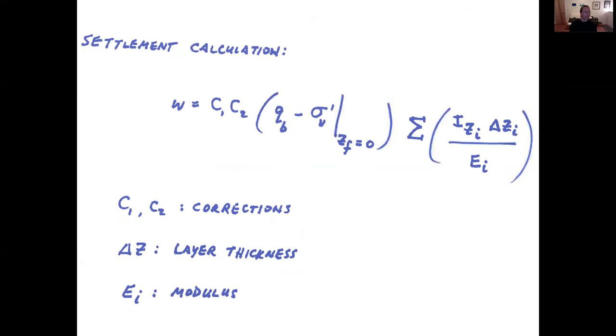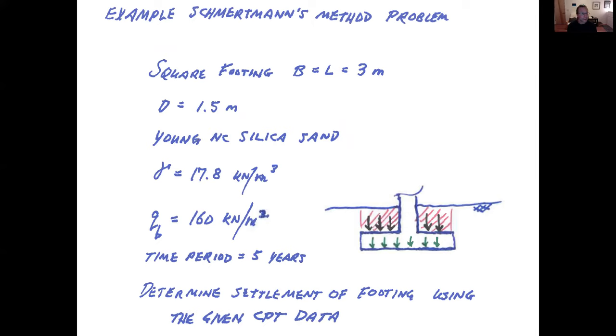The settlement calculation looks something like this. W, Salgado terminology for settlement, is equal to C1 times C2, the correction factors, times this net change, net stress change from the endpoint after construction to the starting before any construction was there, times a summation of this I sub Z for a given layer times delta Z I over EI. And the C1, C2 are corrections as I mentioned, delta Z is a layer thickness and EI is a modulus. We'll go through an example here a bit to see how this all unfolds. And that is in fact right here the next on the program.